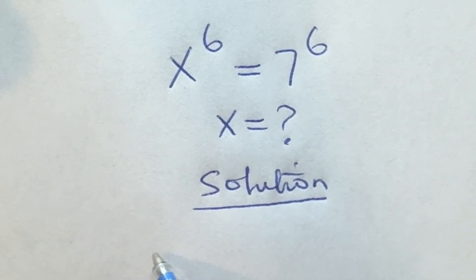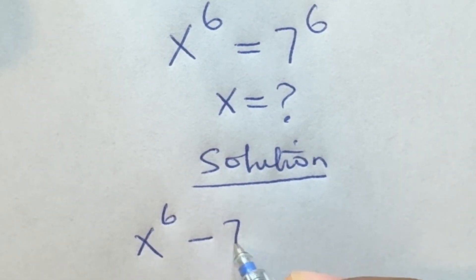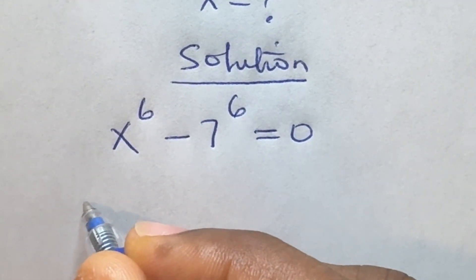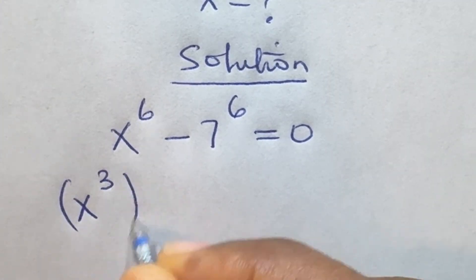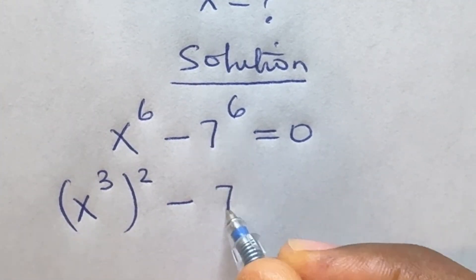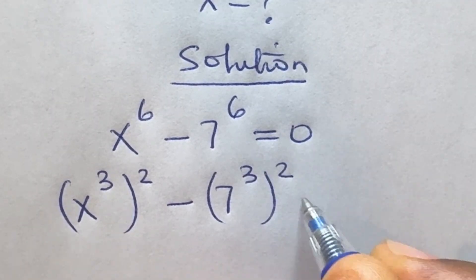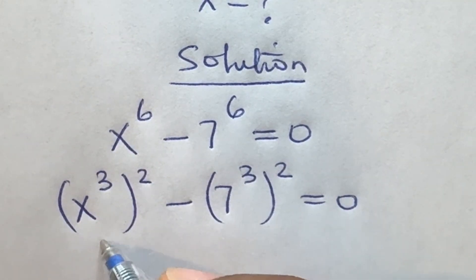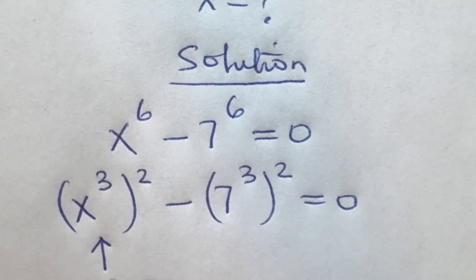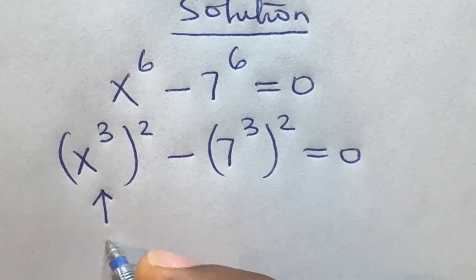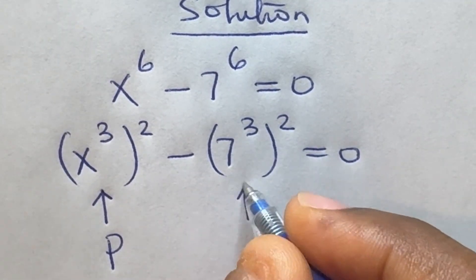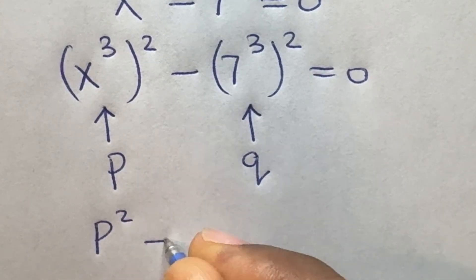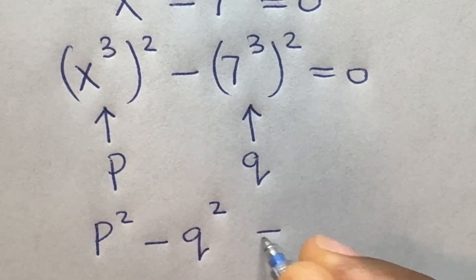I'm going to rewrite this equation as x raised to power 6 minus 7 raised to power 6 is equal to 0. I can rewrite these as x raised to power 3, raised to power 2, minus 7 raised to power 3, raised to power 2, equals 0. If I represent each with a different letter — x³ as p and 7³ as q — then we have p squared minus q squared equals 0.